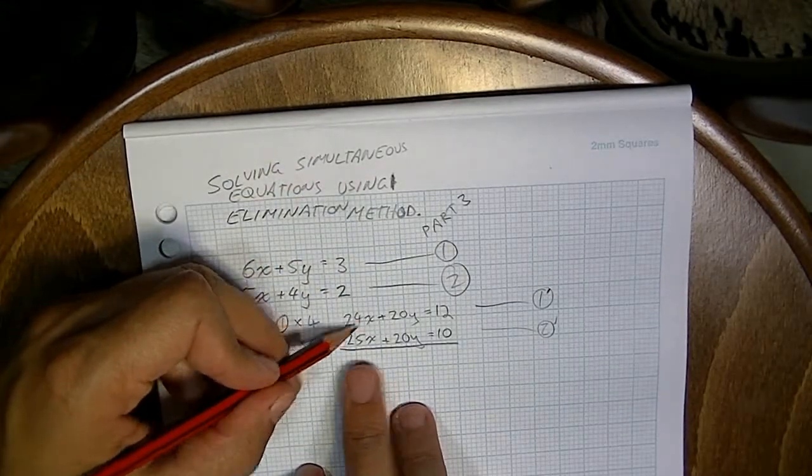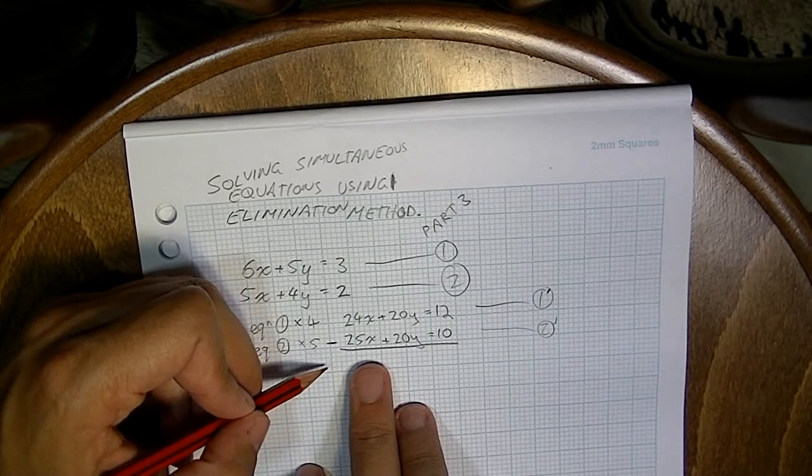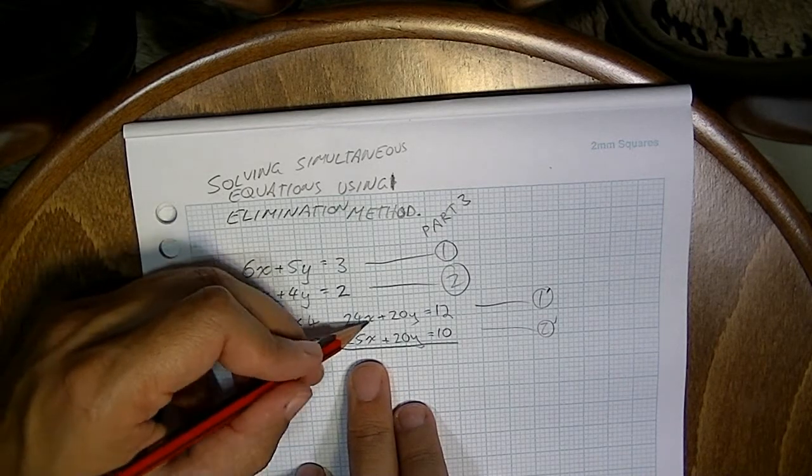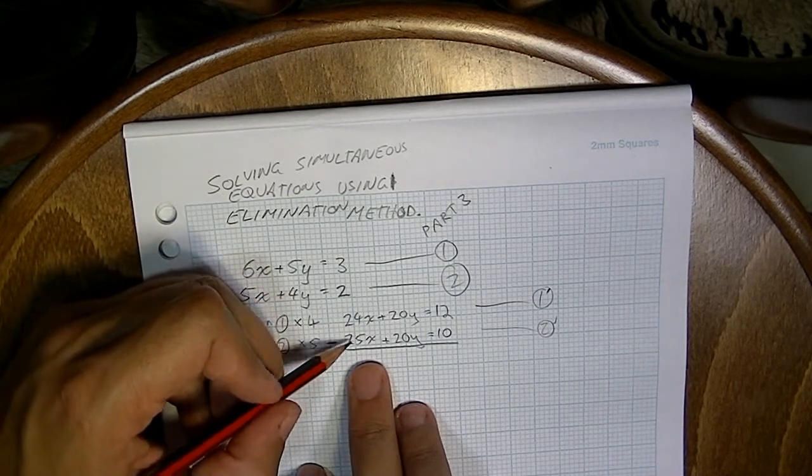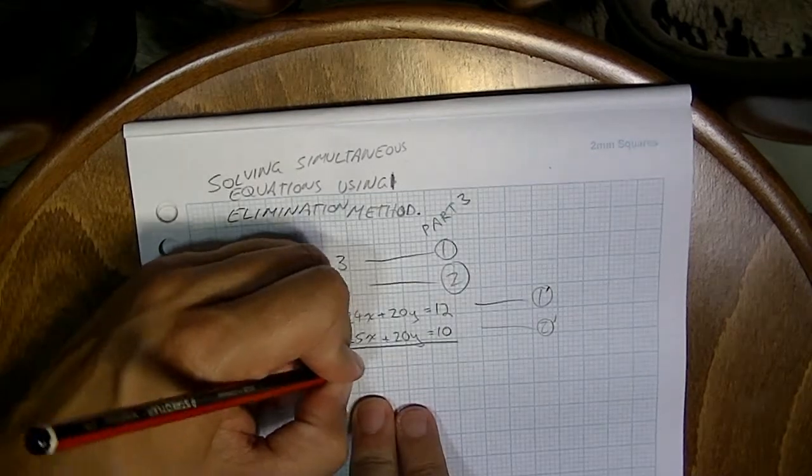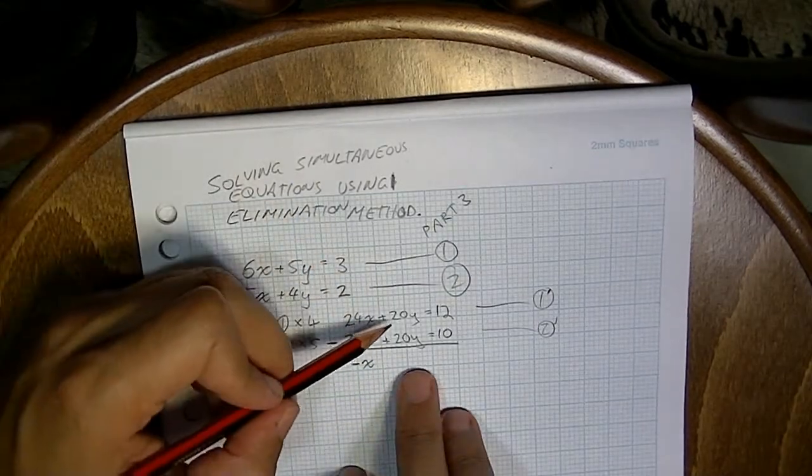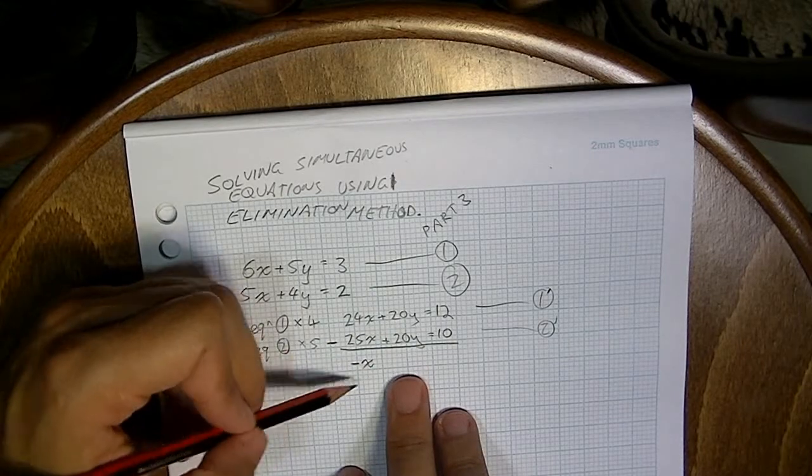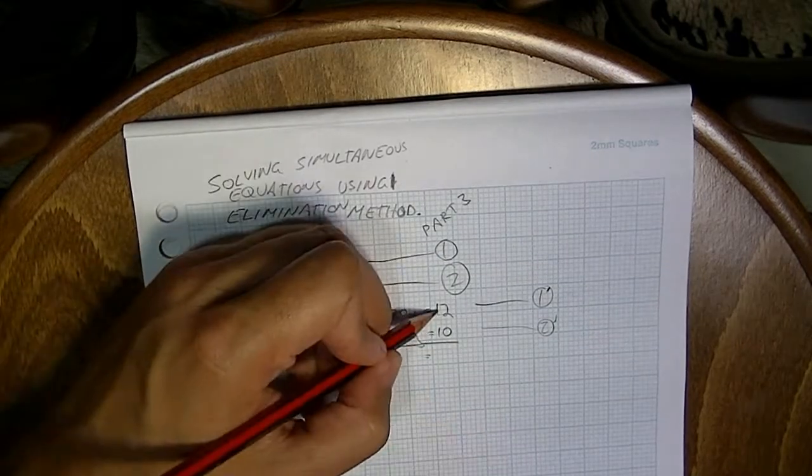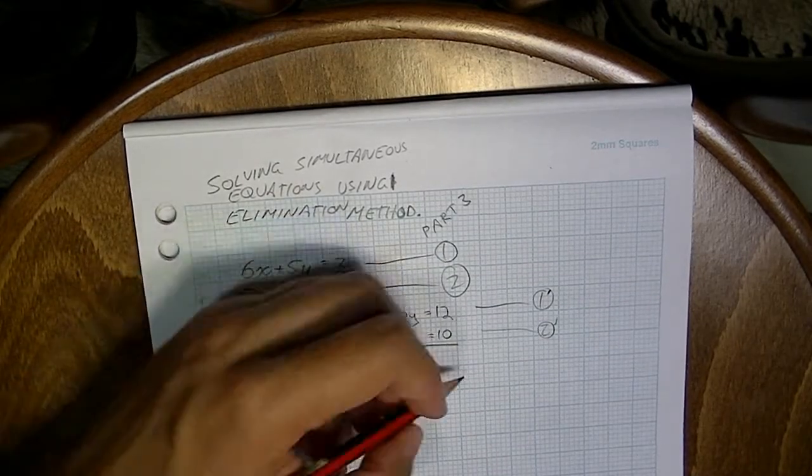So 24x minus 25x, that's going to give me... 24x minus 25x, that's going to be negative x. And 20y minus 20y, they're going to cancel each other out. And 12 minus 10, that's going to give me 2.